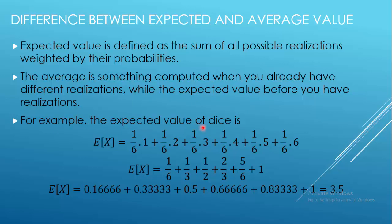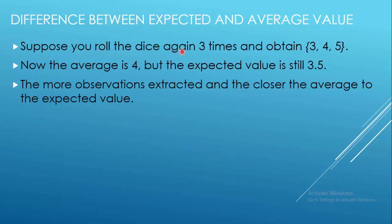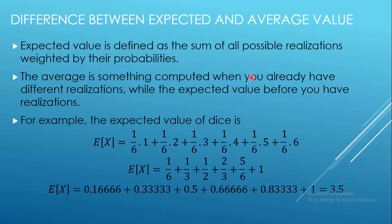For example, the expected value of a die is (1/6)×1 + (1/6)×2 + ... up to 6, because 1/6 is the probability and we multiply it by the weighted realization. So we multiply all possible realizations by their probabilities to get E[X] = 3.5. If you roll the die three times and get 3, 4, and 5, the average is 4 but the expected value remains 3.5, because it is based on the probability model.